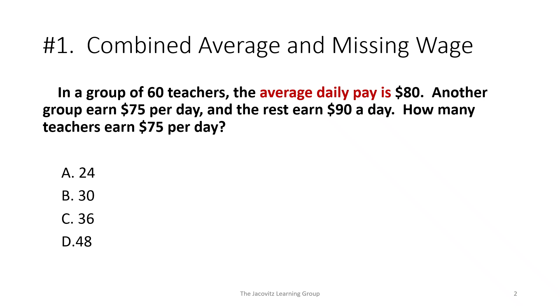In a group of 60 teachers, the average daily pay is $80. Another group earns $75 per day and the rest earn $90 a day. How many teachers earn $75 per day? That's the question. Choices are $24, $30, $36, and $48.